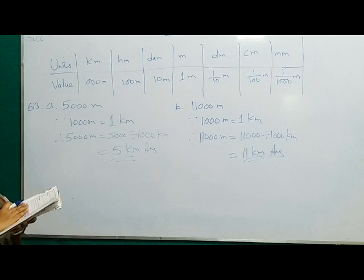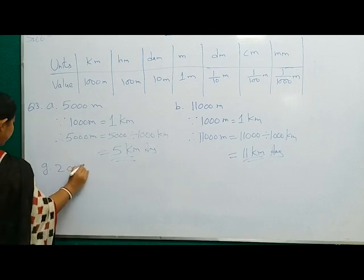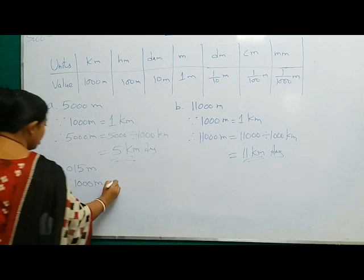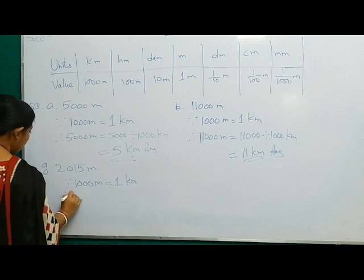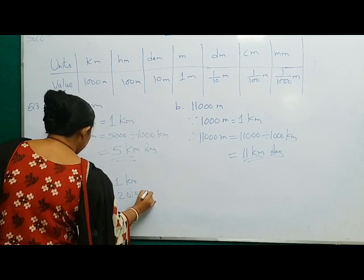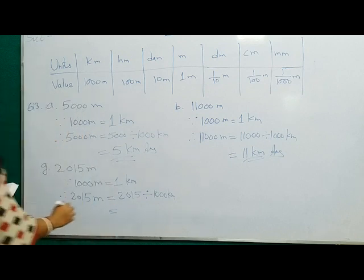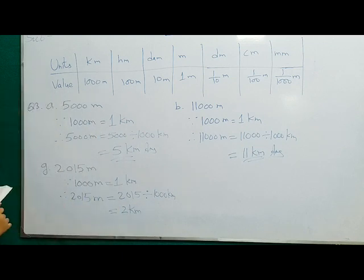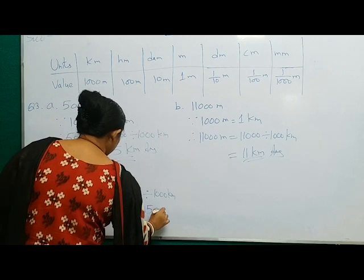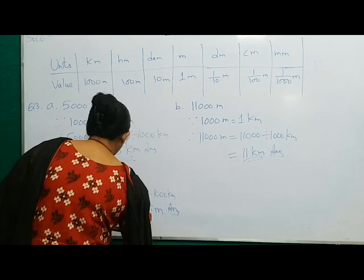One more question we will try, that is the last one: 2015 meters, number G. Since 1000 meters is equal to 1 kilometer, therefore 2015 meters is equal to 2015 divided by 1000 kilometers. When you divide, you will get 2 as the quotient — so 2 will be the kilometers — and the remainder will be 15, so this 15 will be meters. The answer is 2 kilometers and 15 meters. This is all about question number 3.